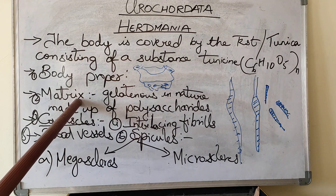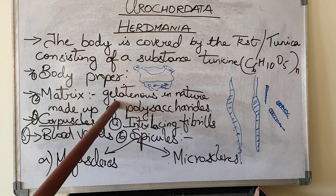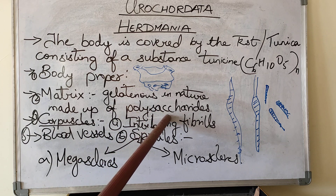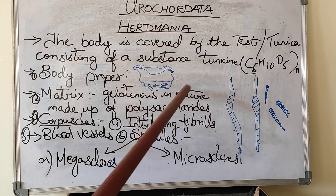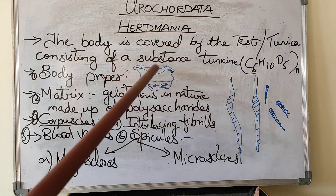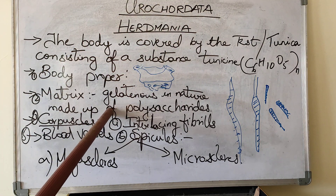Now we will see what is matrix. It is gelatinous in nature and is made up of polysaccharides — polysaccharides here called tunicine. Tunicine was supposed to be confined only in the tunicates, that is only in the urochordates.